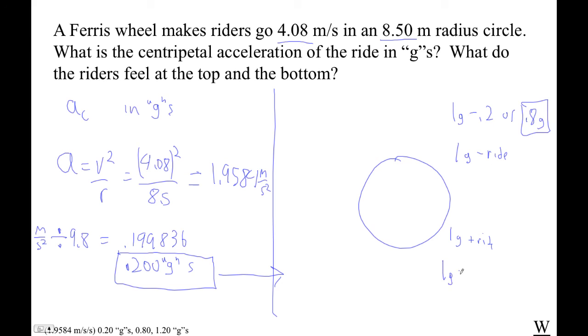And then at the bottom, it's 1g plus the ride. So 1g plus 0.2 is 1.2 g's. Okay, so remember, you're heavy at the bottom, you're light at the top. The world is a good place.